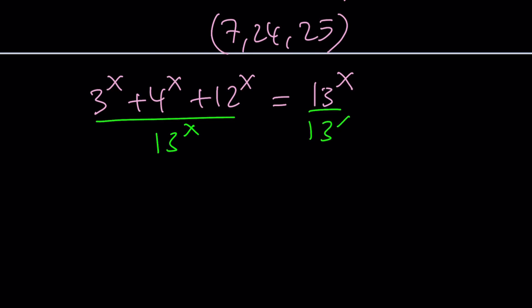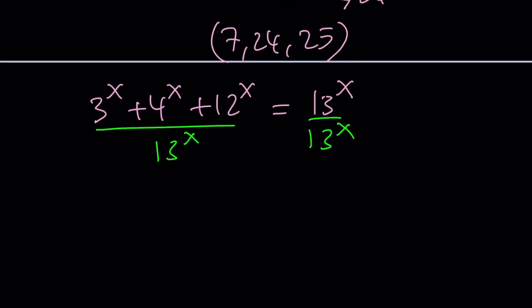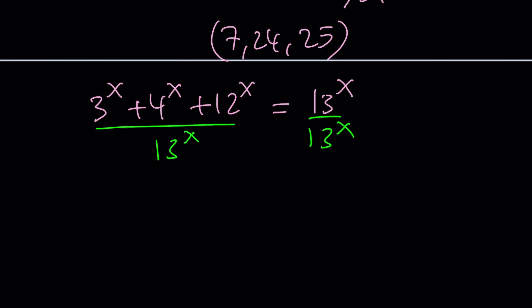Dividing by 13 to the power x is good for a number of reasons. Since 13 is the highest base, dividing by it gives us 1 on the right, and everything else becomes a base less than 1. That's the benefit of using the largest base. If you divided by 12 to the power x instead, one side would look weird. But dividing by 13^x gives us (3/13)^x plus (4/13)^x plus (12/13)^x equals 1.